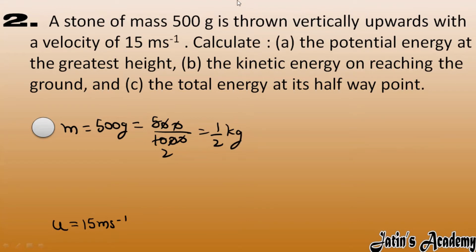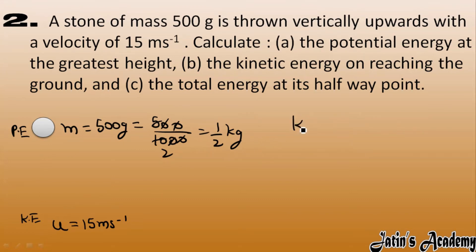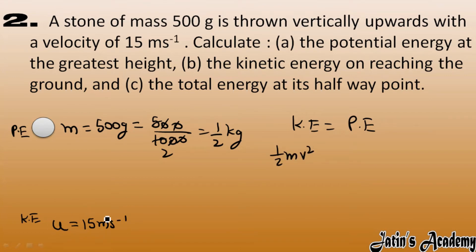We need to calculate the potential energy at the greatest height. When air friction is zero, kinetic energy is completely converted into potential energy at that point. So kinetic energy equals potential energy, and kinetic energy at the lowest point is half mv², where velocity is the initial velocity of 15 meters per second.